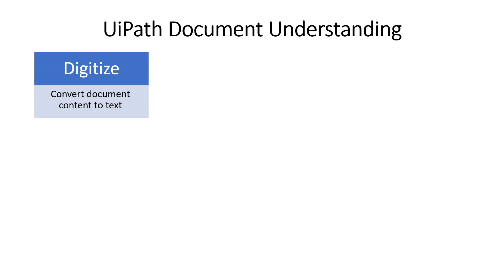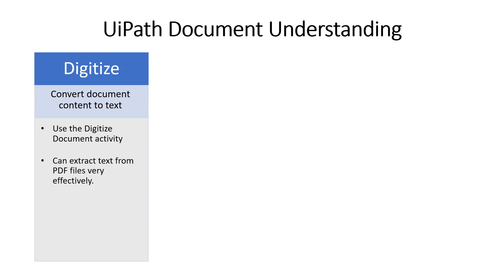When we digitize a document, we basically convert whatever content it has to text. And we do that in UiPath Studio by using the Digitize Document activity. The Digitize Document activity can extract text from PDFs very effectively. And it can extract from images using one of many available OCR engines. By doing that, you simply convert whatever document you have — an image or a PDF — to text. And when you have that text, you're ready to classify the document.